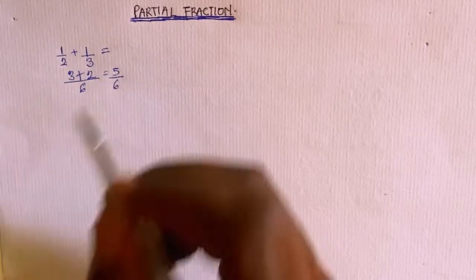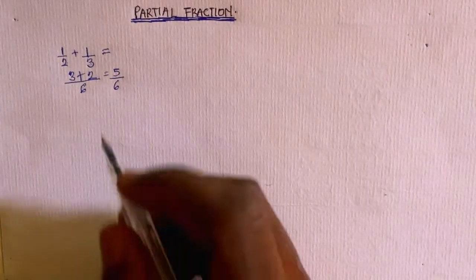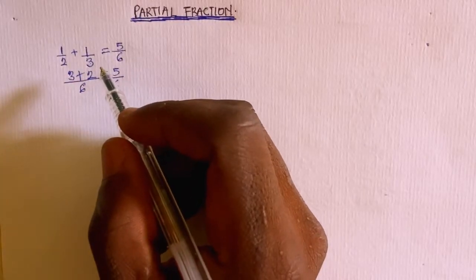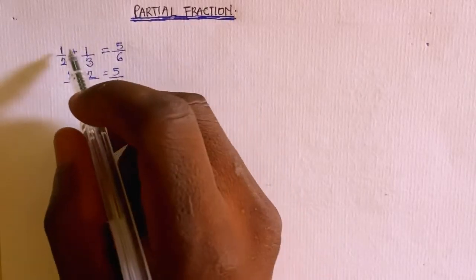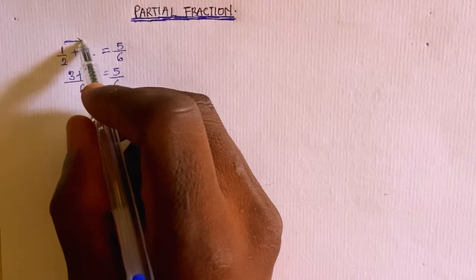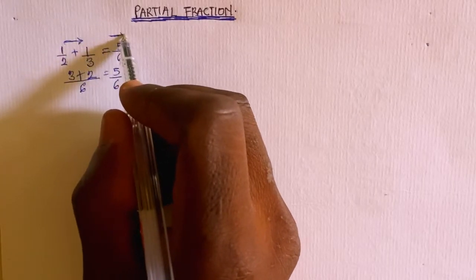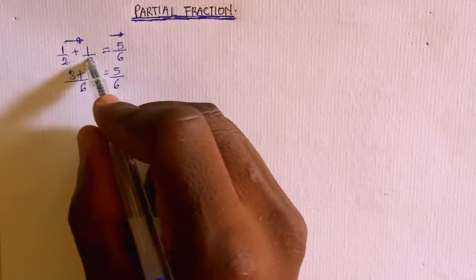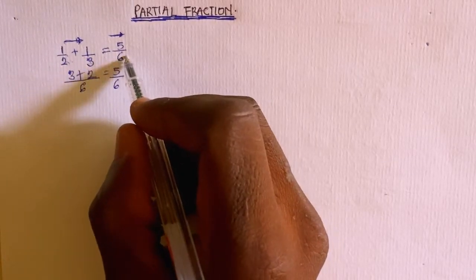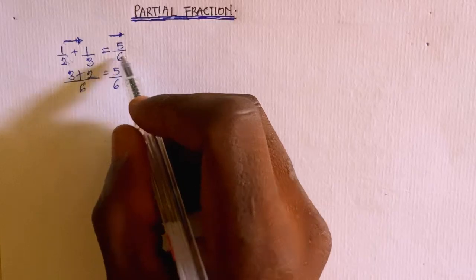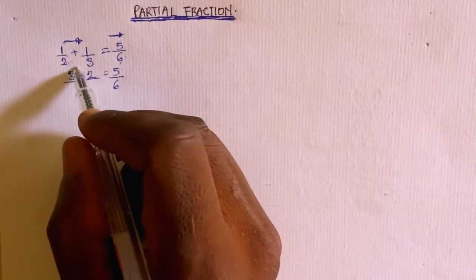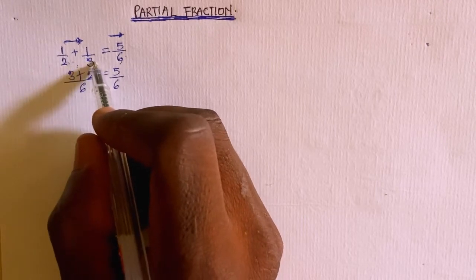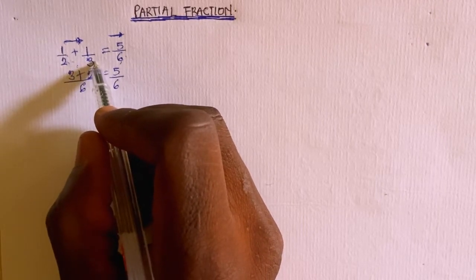What actually happens is that since you have 5 over 6, if you are going from this side to this side, that means you are adding two smaller fractions together to give a higher fraction. But if you are going from this side to this side, that means you are splitting a single fraction into its smaller constituents — and that is just what is known as partial fraction.